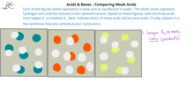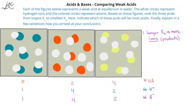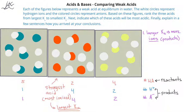When we compare these figures, the first one has one dissociated weak acid and five molecules that are undissociated. The second image has four anions and four hydrogen ions that have dissociated, and two molecules that have not dissociated. The third picture has two hydrogen ions and two anions that have ionized, and four weak acid molecules that are unionized.